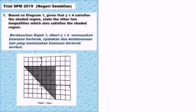Next question: SRA SPM 2019, Negeri Sembilan. Based on diagram 1, given that y less than or equal to 4 satisfies the shaded region, state the other two inequalities which also satisfy the shaded region. First, we must know where y less than or equal to 4 is. The straight line y equals 4 is a horizontal line passing through the y-axis at 4, and the region is below that line.